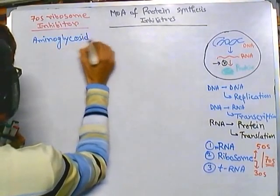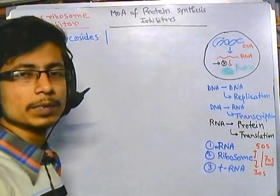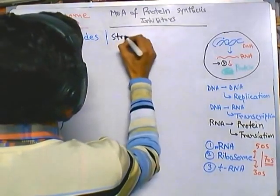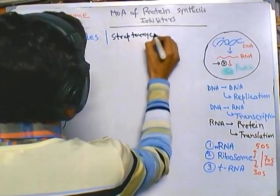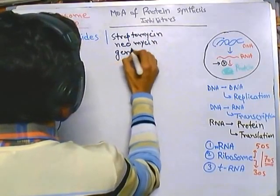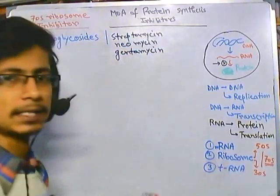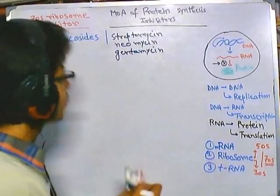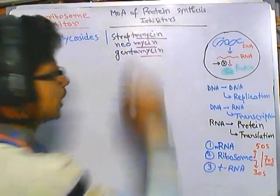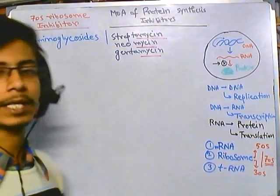Aminoglycosides — there are a lot of examples. Remember, we always write the suffix as '-mycin' or '-micin'. For example: streptomycin, neomycin, gentamicin. This '-cin' or '-mycin' ending is a way of remembering all the names. Gentamicin, neomycin, streptomycin — all these different antibiotics are part of aminoglycosides, and they attack the whole assembled ribosome complex.